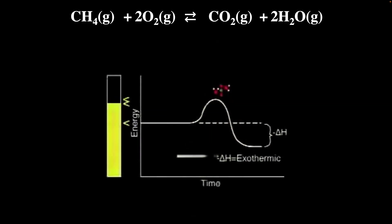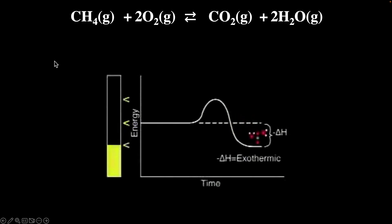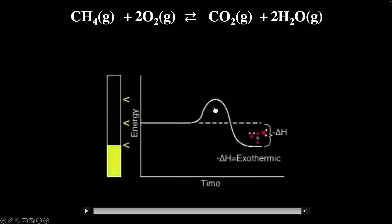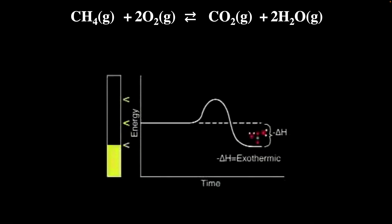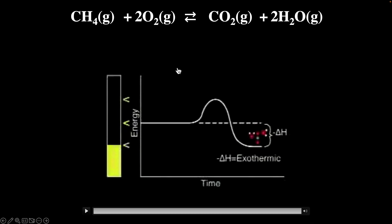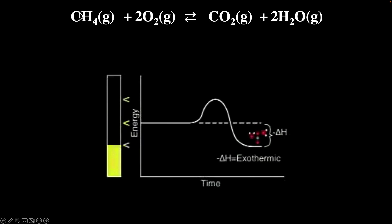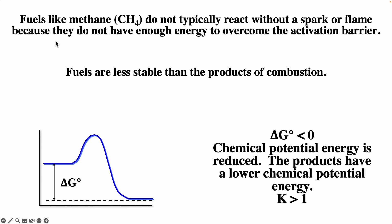At this point, bonds break and new bonds form in an exothermic reaction that releases energy. We have methane, which is basically natural gas, plus oxygen going to these products. If it wasn't for the activation energy, we couldn't store fuels — all fuels would be consumed. But because there's activation energy, we're actually able to store fuels. Fuels like methane do not typically react without a spark or flame because they typically do not have enough energy to overcome the activation barrier.